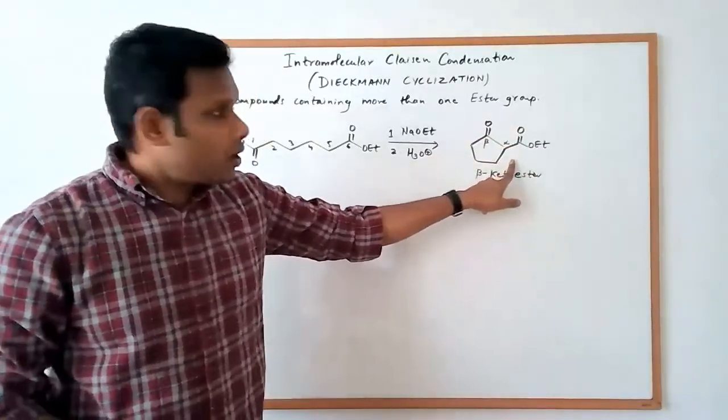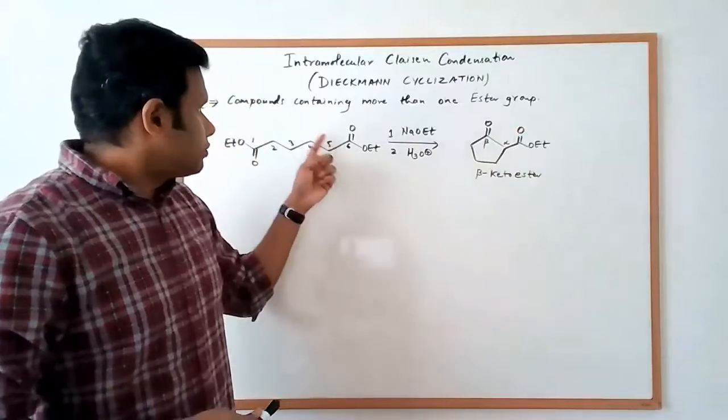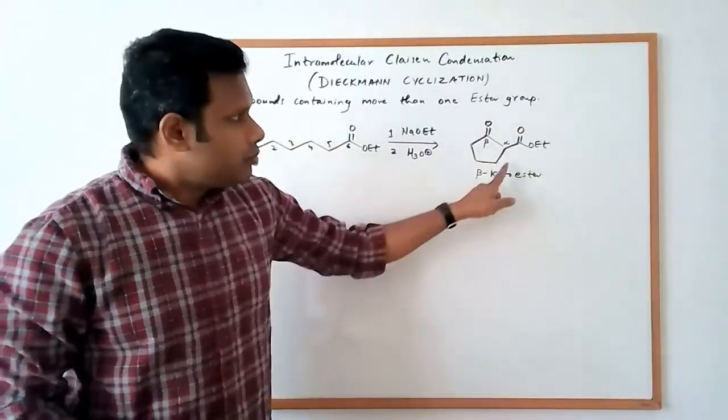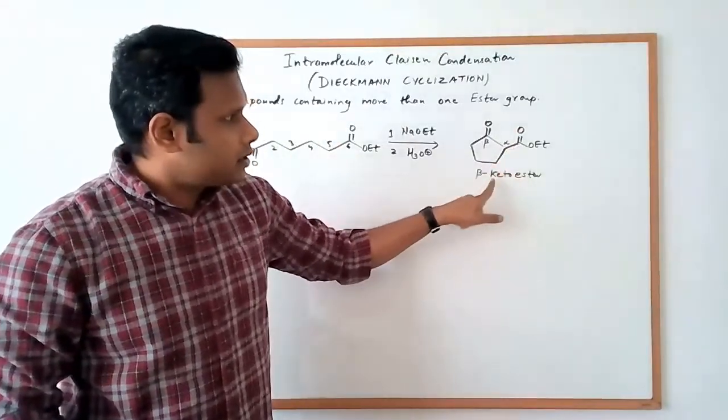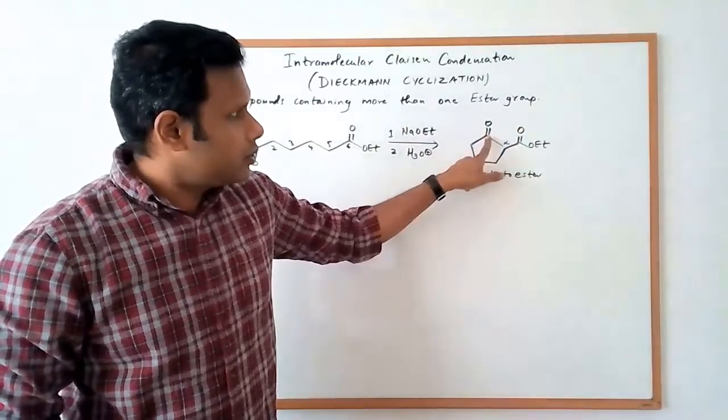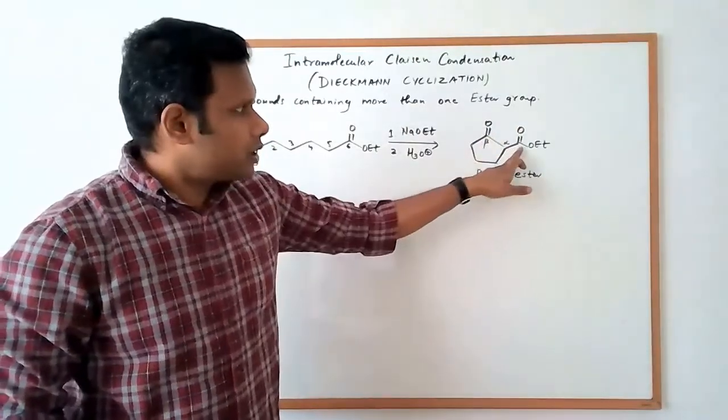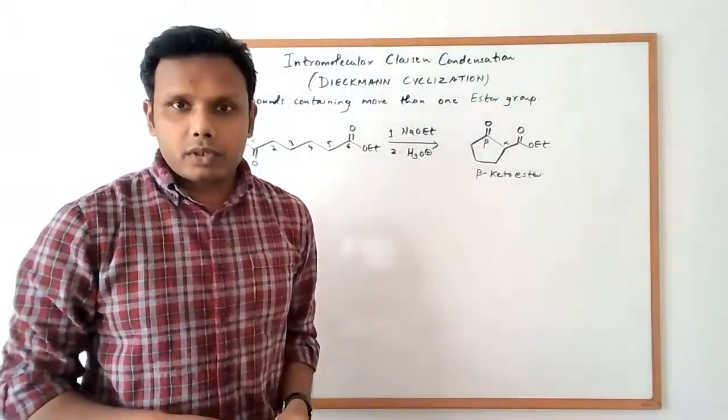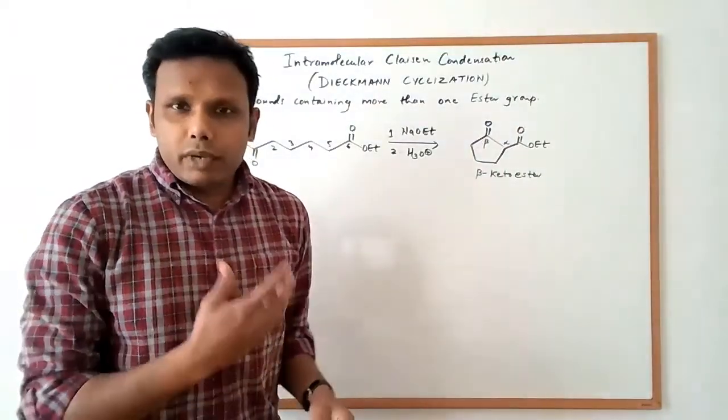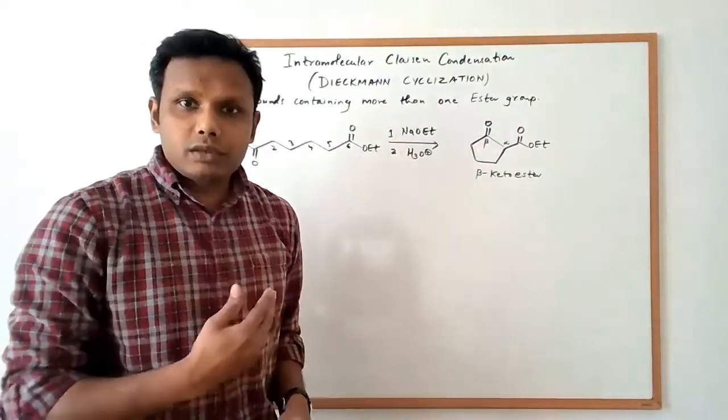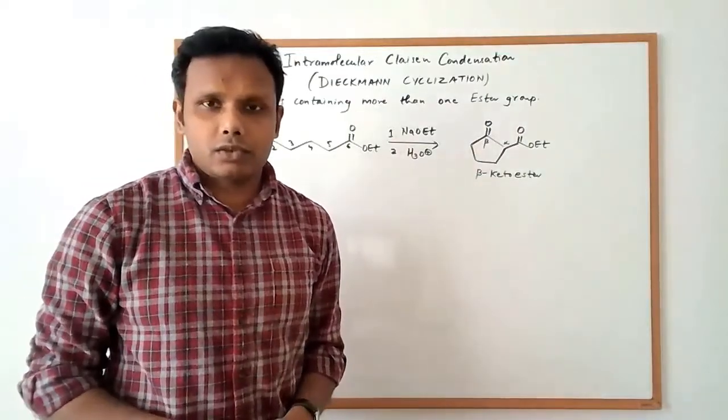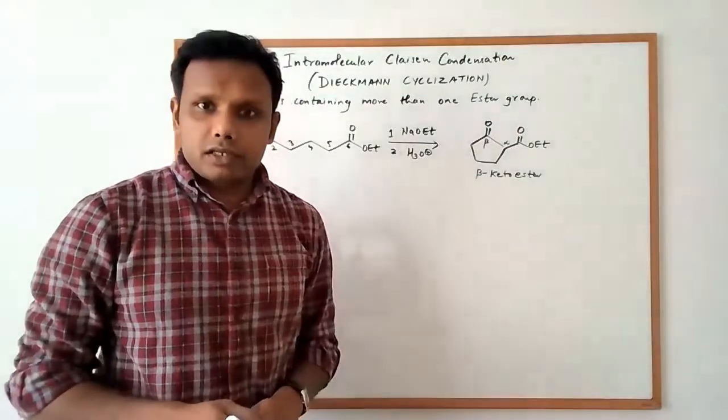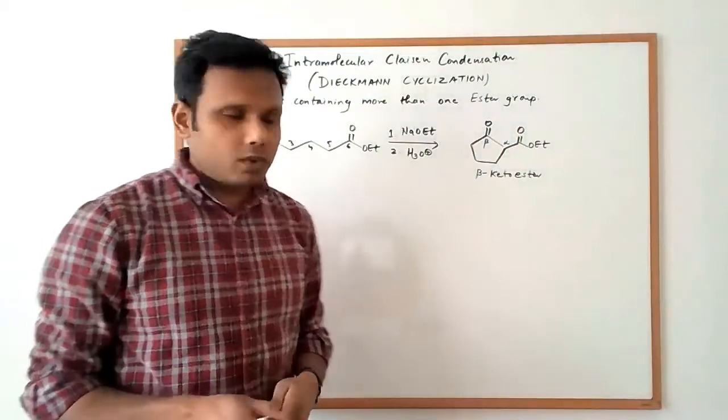Now this compound is cyclic because we're starting with a diester. But overall, when you look at it, this is still a beta-keto ester. So when you start from the ester, there is a keto group on the beta carbon. So that tells us that mechanistically, this should be similar to a Claisen condensation reaction.